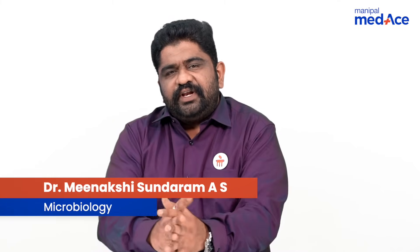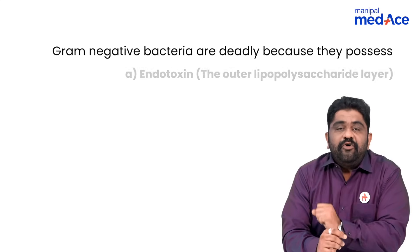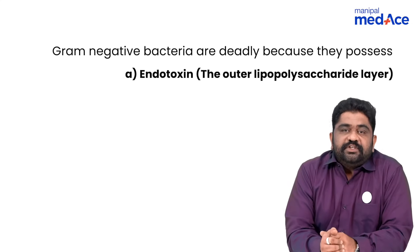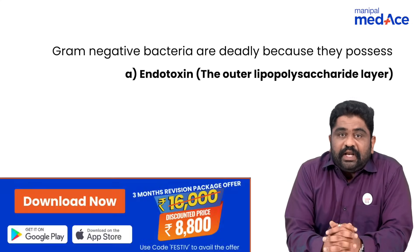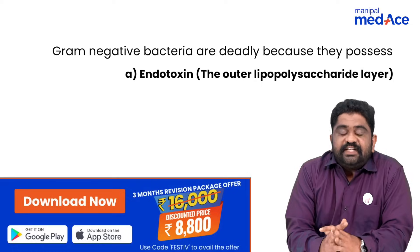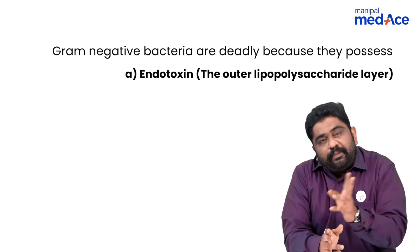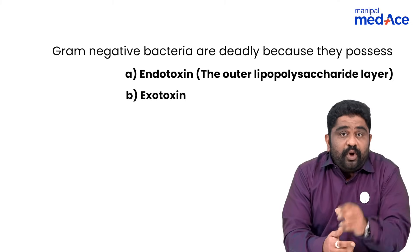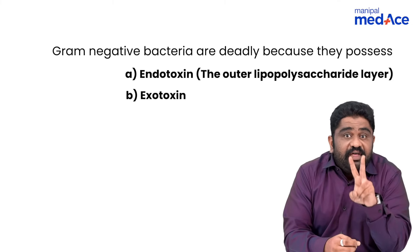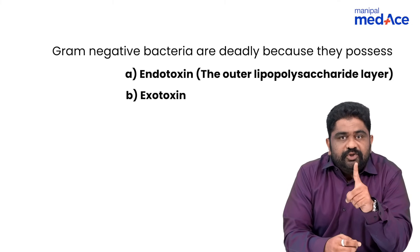Dear students, do you realize that gram-negative organisms are deadly because of two things? They are gram-negative. On the outermost surface of the gram-negative organisms, you have a lipopolysaccharide layer which actually doubles up as the endotoxin. And most of the gram-negative organisms are also capable of releasing a toxin called exotoxin. They are double-edged and double-weaponized — they have both endo- and exotoxins.